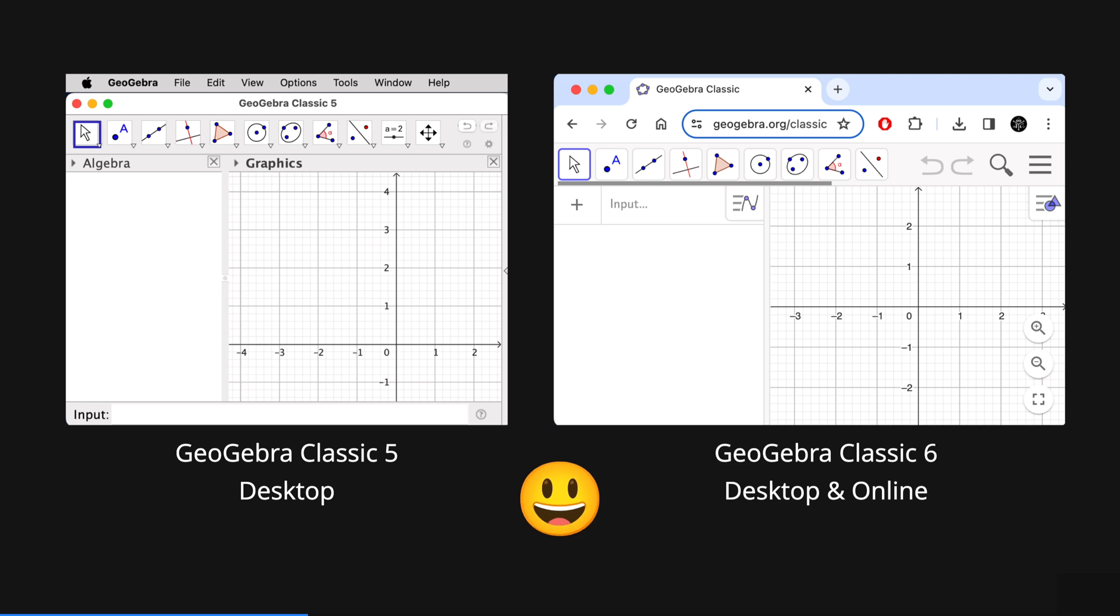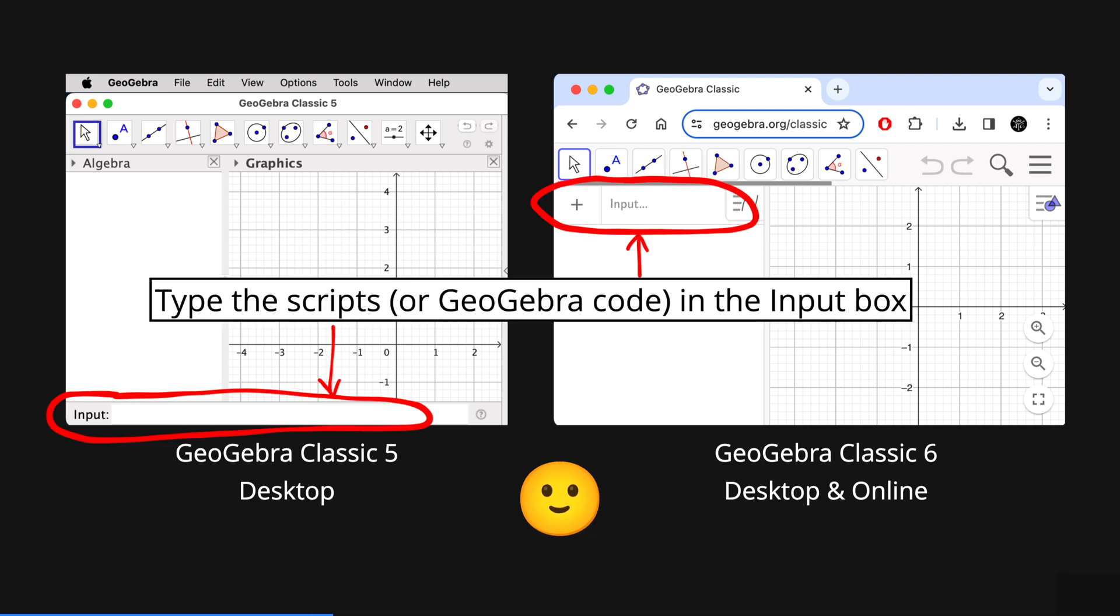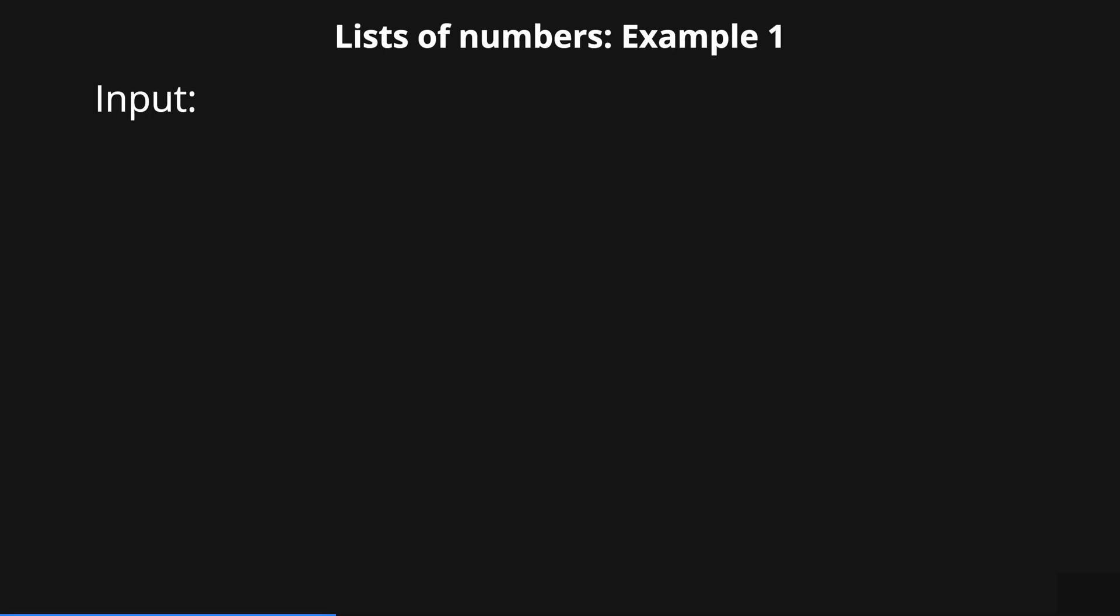By the way for the examples we are going to cover here you can use GeoGebra Classic 5 for desktop or Classic 6 for both desktop or online version. You just need to type the scripts or GeoGebra code in the input box. Now let's have a look at the first example.